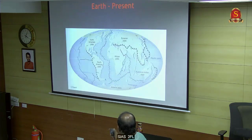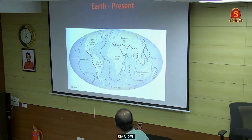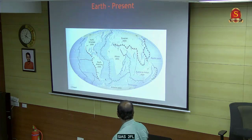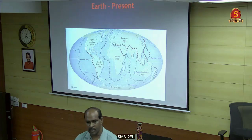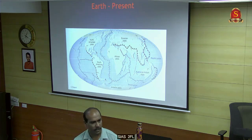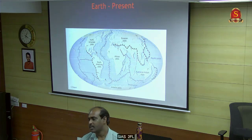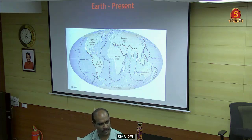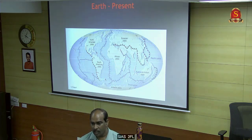This is the present situation of the earth. That is why we have this convergent boundary. India moves towards the north-northeast and hits the Himalayan region. Now it is subducting - that is why the Himalayas formed.